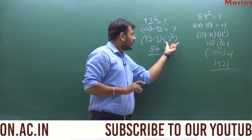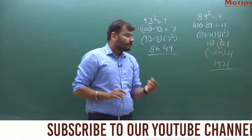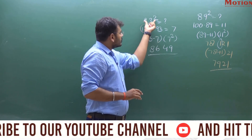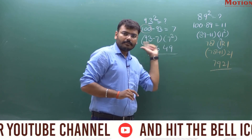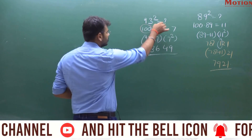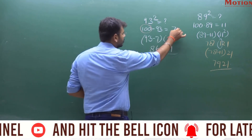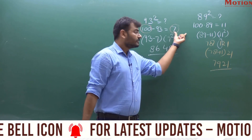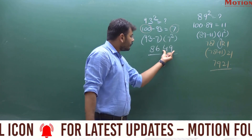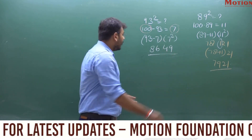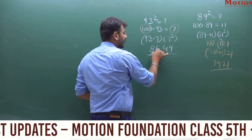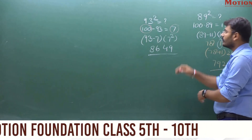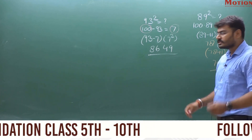7 squared will give you the last two digits. And then take the original number minus 7: 93 minus 7 is 86. So 7 squared is 49, which gives the last two digits, and 93 minus 7 is 86. So 8649 is the result of 93 squared.